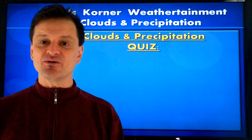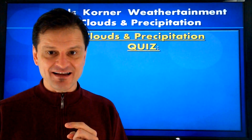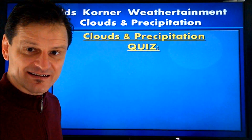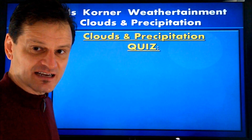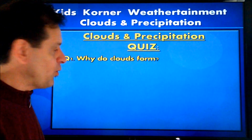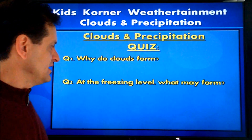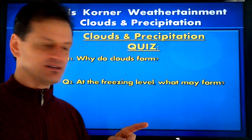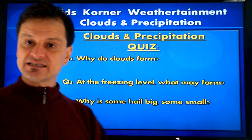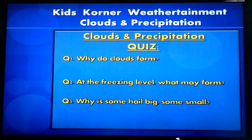Okay, it's time for our clouds and precipitation quiz. Have your thinking hat on? Pen and paper ready? You can pause to allow students the opportunity to come up with answers with as much time as you need. Question number one: why do clouds form? Question number two: at the freezing level, what may form? And then question number three: why is some hail big and some hail small? Think about that, we'll come right back.